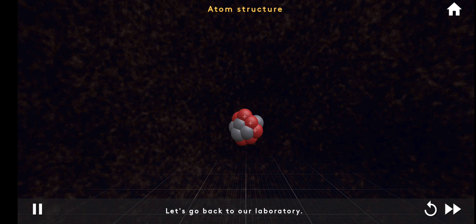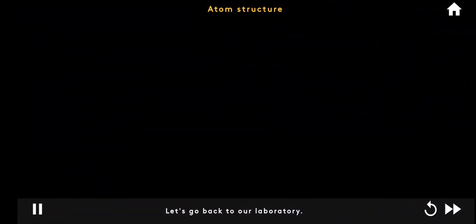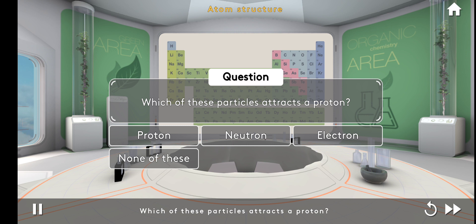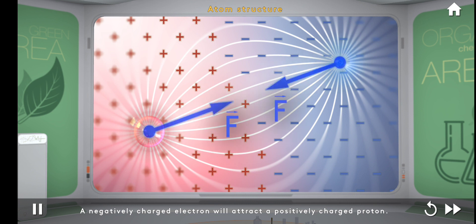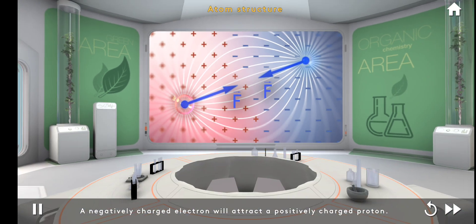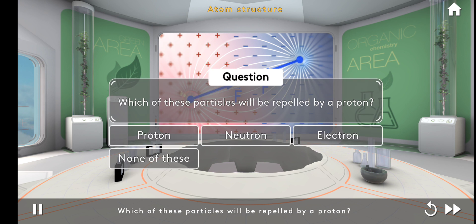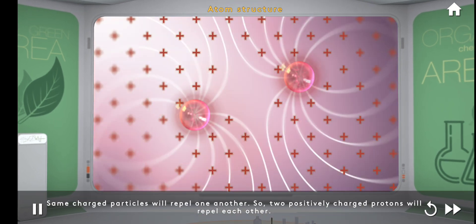Let's go back to our laboratory. Which of these particles attracts a proton? A negatively charged electron will attract a positively charged proton. Which of these particles will be repelled by a proton? Same charged particles will repel one another, so two positively charged protons will repel each other.